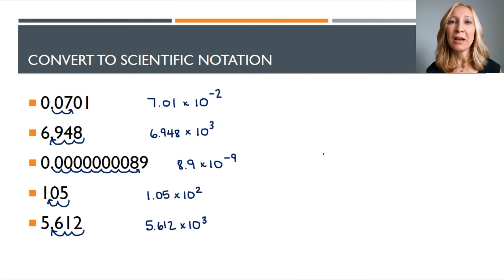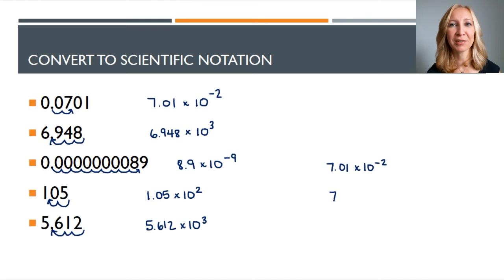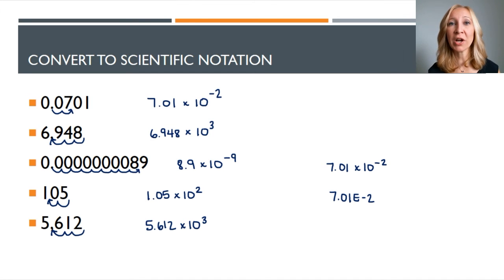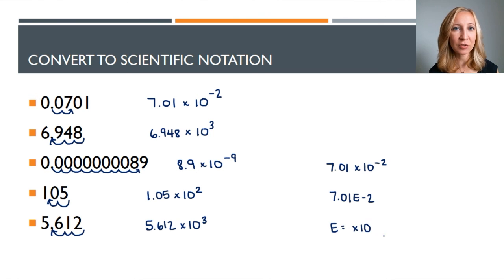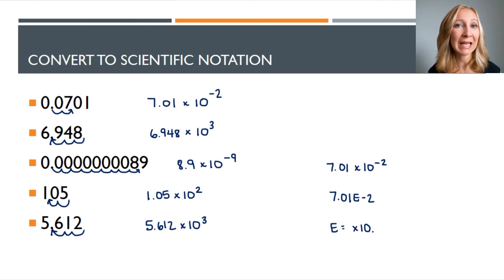A side note regarding scientific notation: calculators don't always represent it the same way you would write it. For example, seven point zero one times ten to the negative two may be represented on a calculator as seven point zero one E negative two. The E represents 'times ten' and the number after E represents the power. So seven point zero one times ten to the negative two and seven point zero one E negative two are just two different ways of writing the same thing.